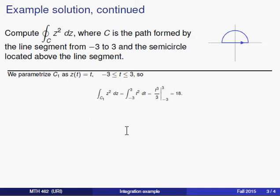Along the first portion of the journey, C₁, which is this line segment, perhaps the easiest parameterization is just to let z equal t and let t run from negative 3 to positive 3. That will trace out these real values along the real axis.